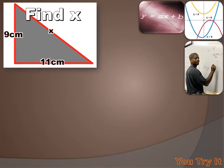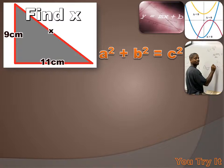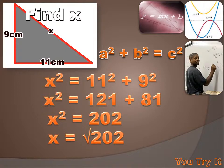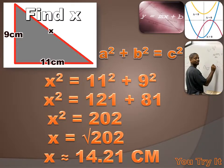We're asked to figure out what the length of the hypotenuse is in this right triangle. The Pythagorean theorem says a squared plus b squared equals c squared, so let's substitute the information we're given: x squared, the hypotenuse squared, equals 11 squared plus 9 squared. That gives us x squared equals 121 plus 81, or x squared equals 202. So x equals the square root of 202, which is approximately 14.21 centimeters.